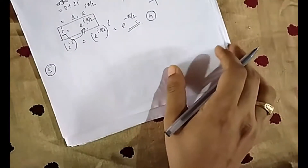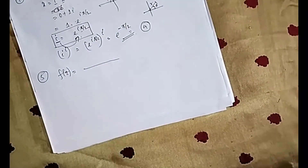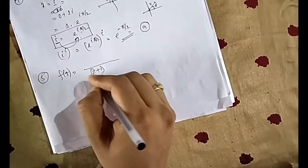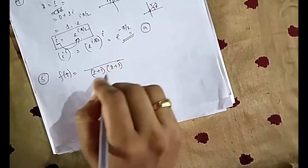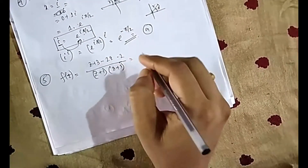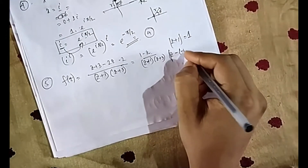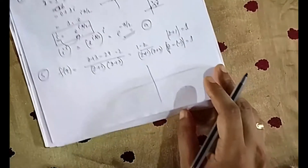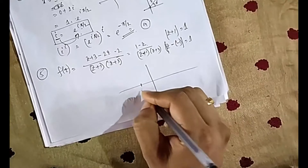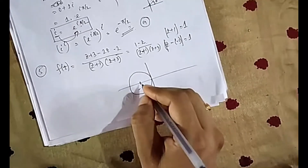Moving to integration — contour integration. To find residues at the poles, you can refer to the theory classes from Lecture 4. The denominator factorizes to (z + 3)(z − 2). The given contour is |z + 1| = 1, which is a circle centered at −1 with radius 1, sitting on the real axis, touching nearby points.